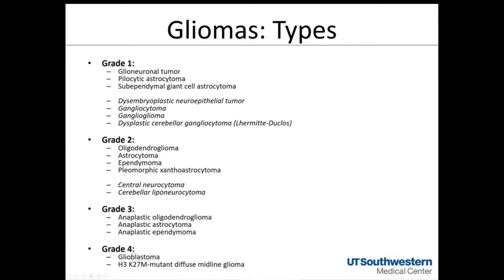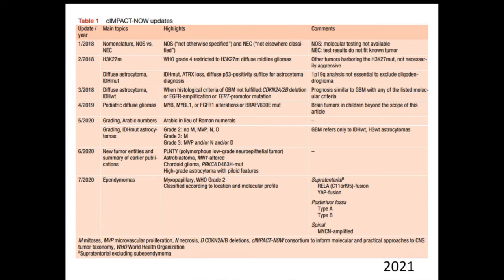Grade III gliomas are basically the anaplastic versions of all grade II lesions: anaplastic oligo, anaplastic astrocytoma, and anaplastic ependymoma, with different prognostic implications based on histology. Grade IV gliomas include two that are most important: glioblastoma — the most common malignant primary brain tumor — and the H3K27M mutant diffuse midline glioma. By current classification, glioblastoma must be IDH wild type.